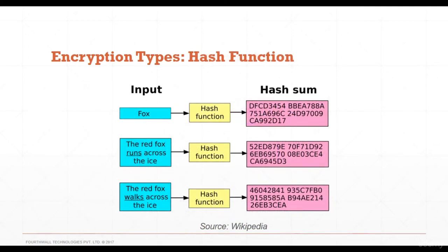Hash functions are one-way encryption — the result cannot be reversed. For example, the word 'fox' is run through a hash algorithm and converted into a hash sum. Similarly, a sentence like 'the red fox runs across the ice' produces a different hash sum. These hash sums cannot be reversed back to the actual plain text.